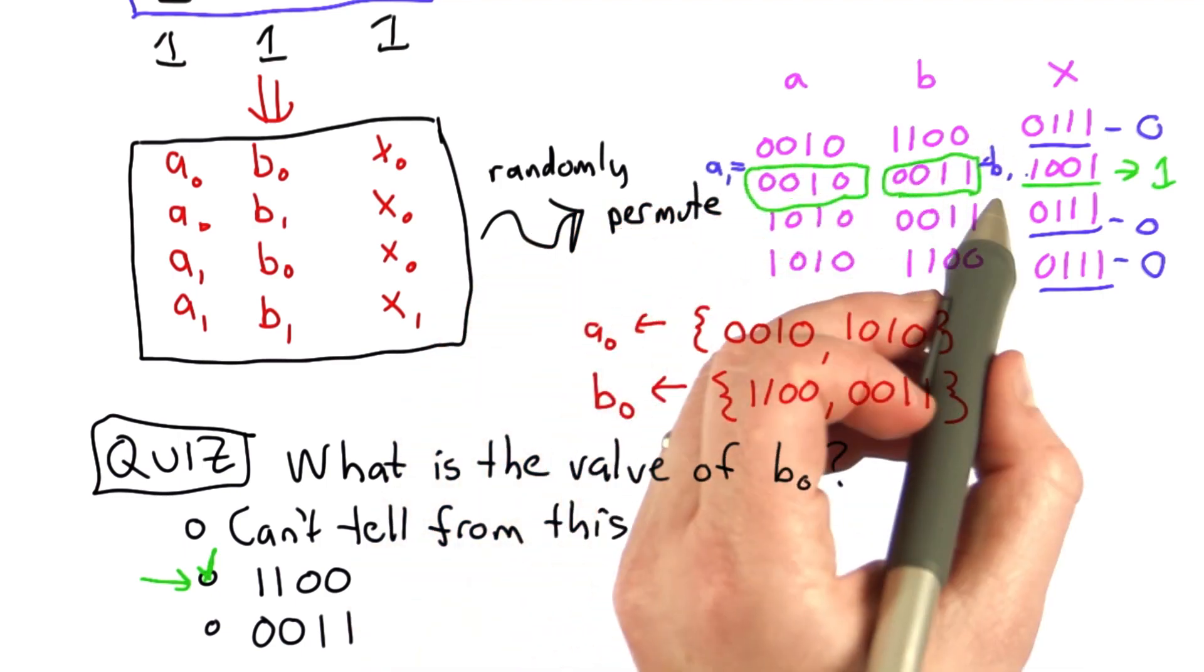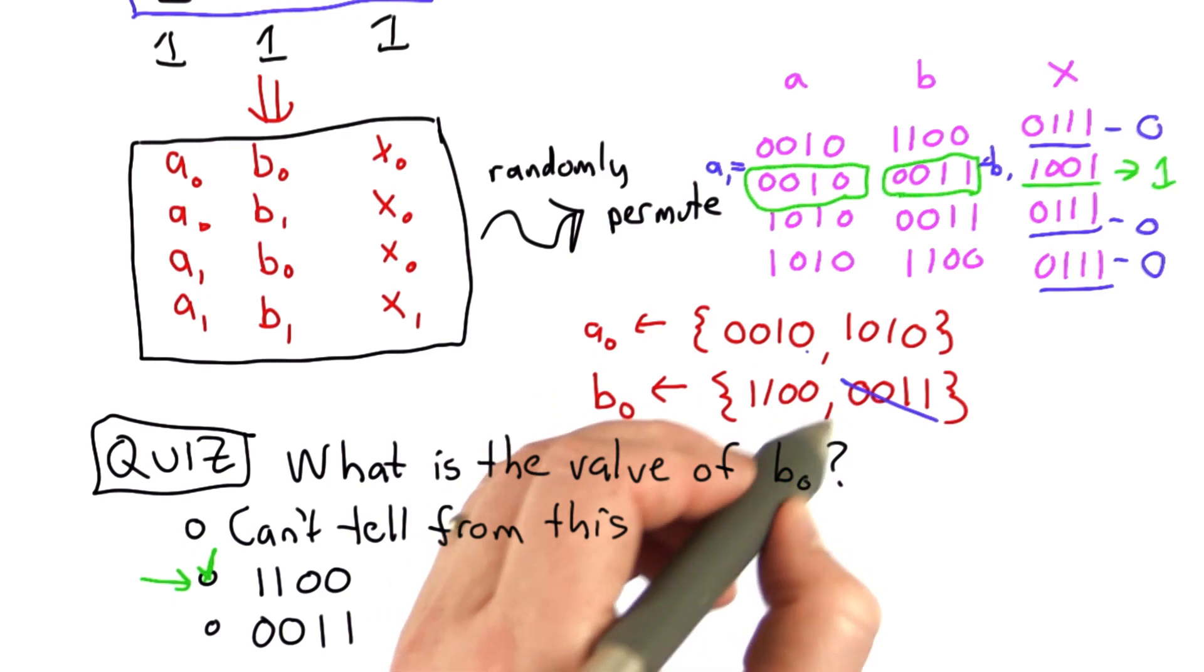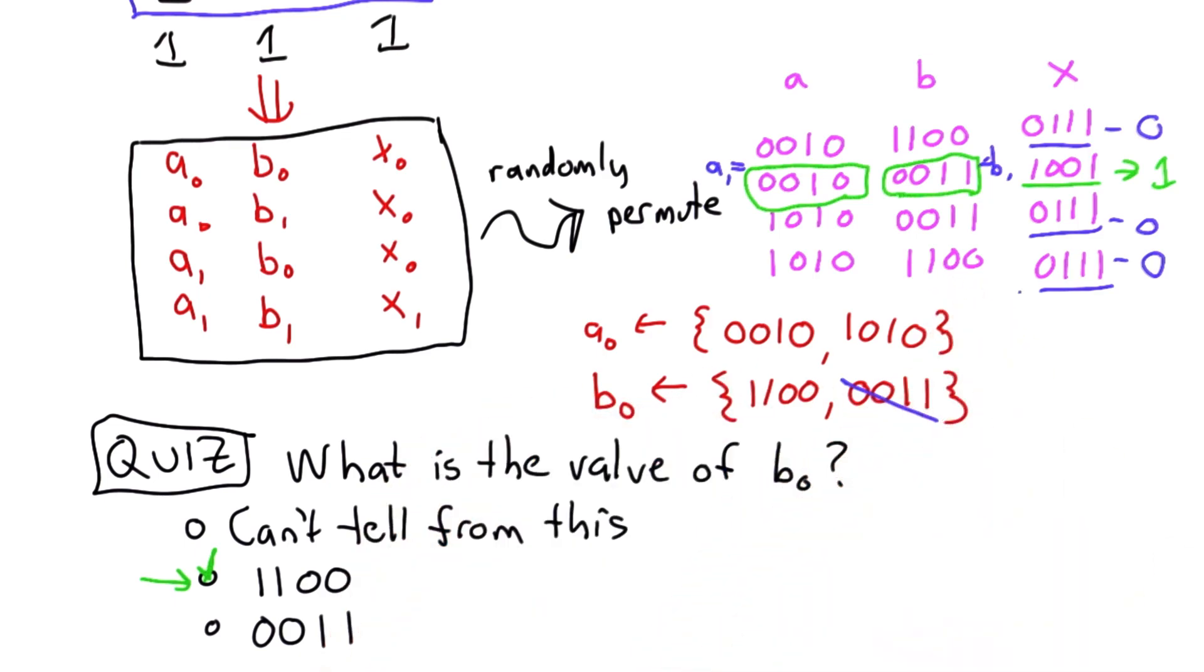So that means we know the value of b1, that's this one. So the value of b0 must be the other one, which is 1100.